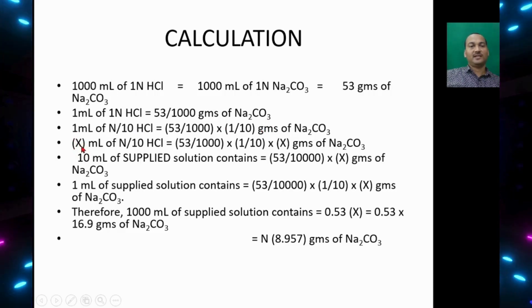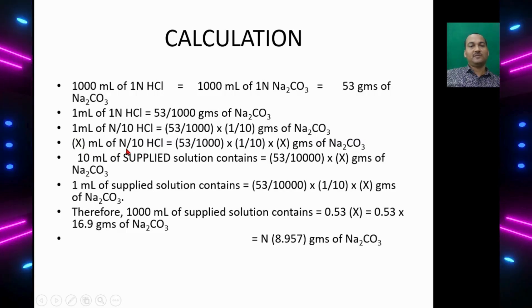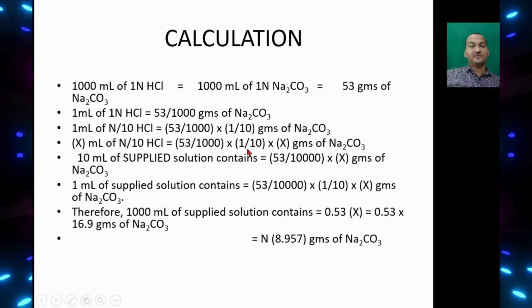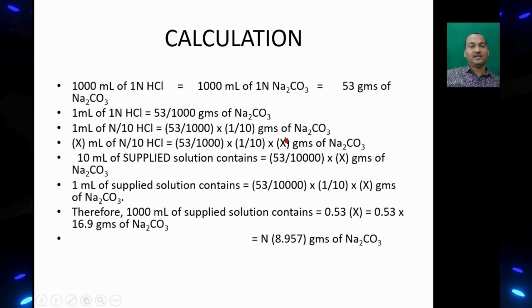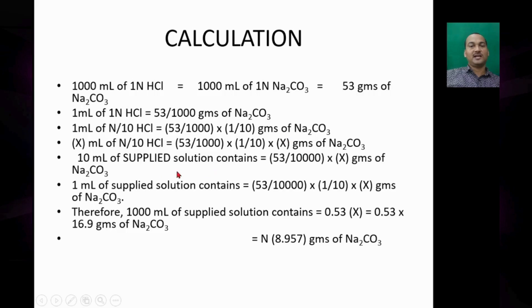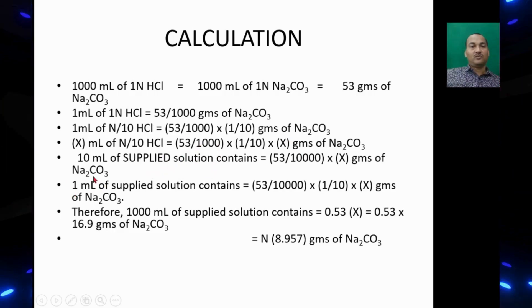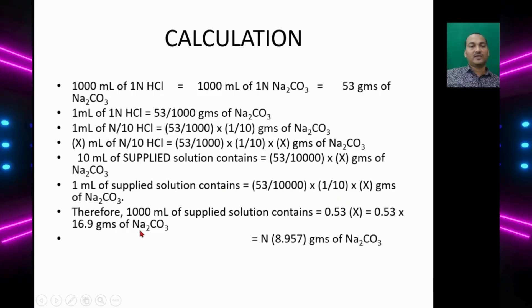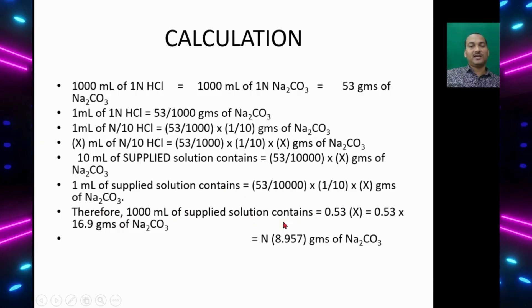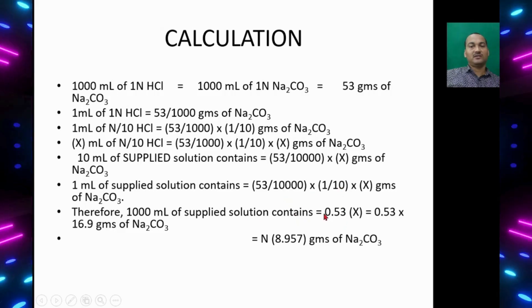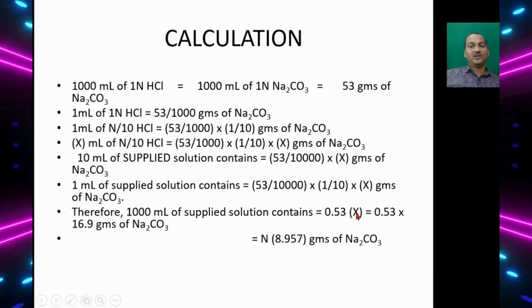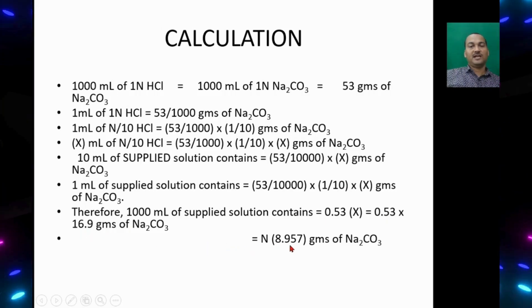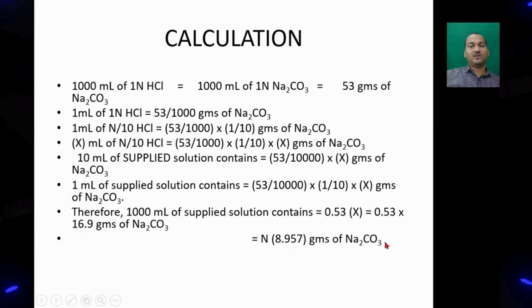So 16.9 ml of N by 10 HCl equals this amount of sodium carbonate present in 10 ml supplied solution. 1 ml of supplied solution will contain this divided by 10, and 1000 ml of supplied solution will contain 0.53 into x. So x is 16.9, that becomes 8.957 grams of Na2CO3.